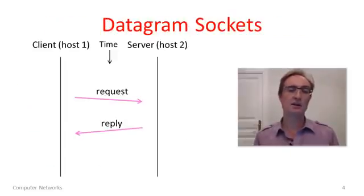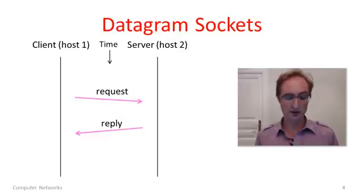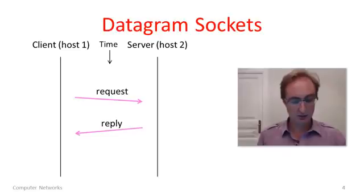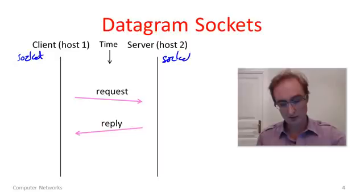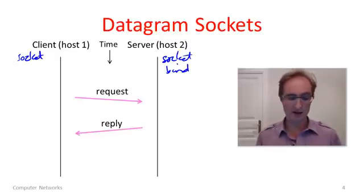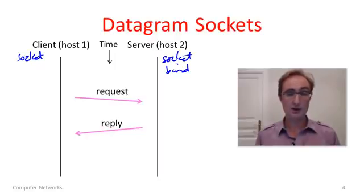We can see how datagrams are used at the socket layer. Here is a simple time sequence diagram. We have a client and a server. The client is sending a request to the server who's returning a reply. The socket calls we would make: first, we need a socket on both sides. On the server side, we need to bind that socket to a well-known port so that the client can contact it.